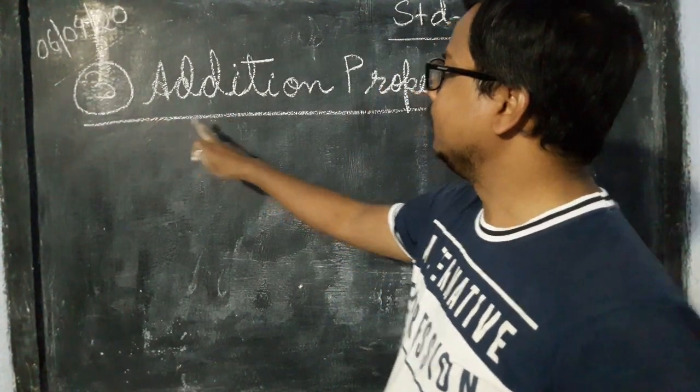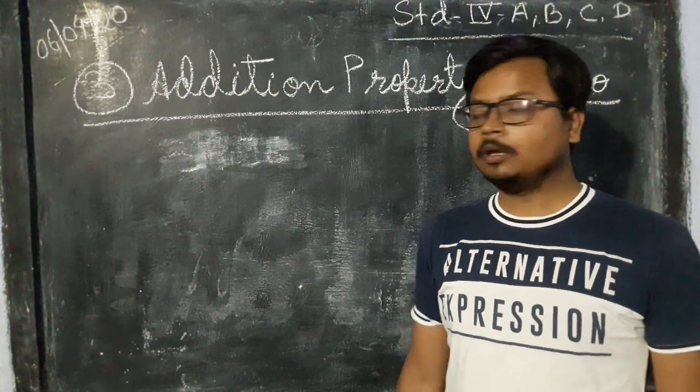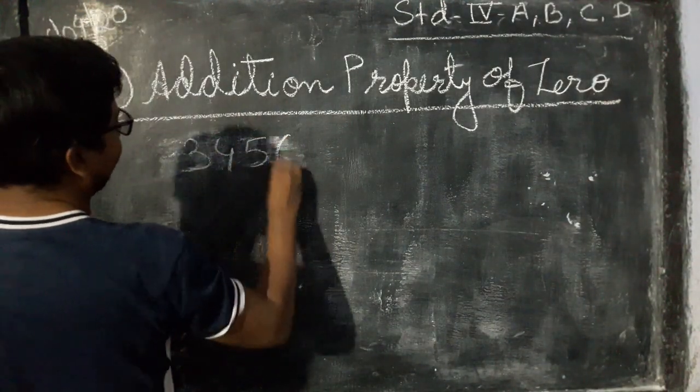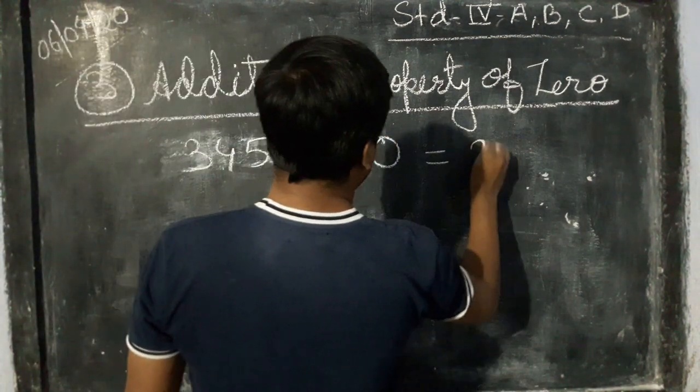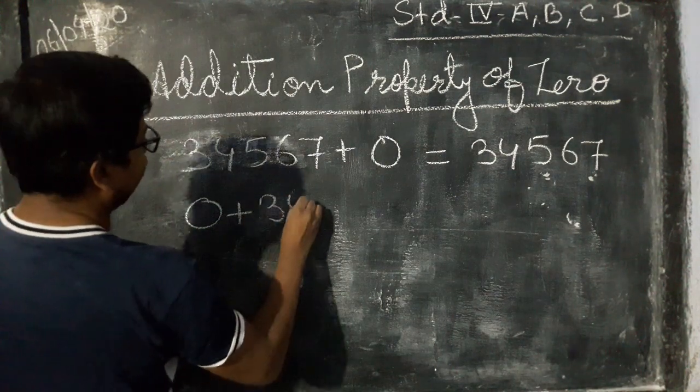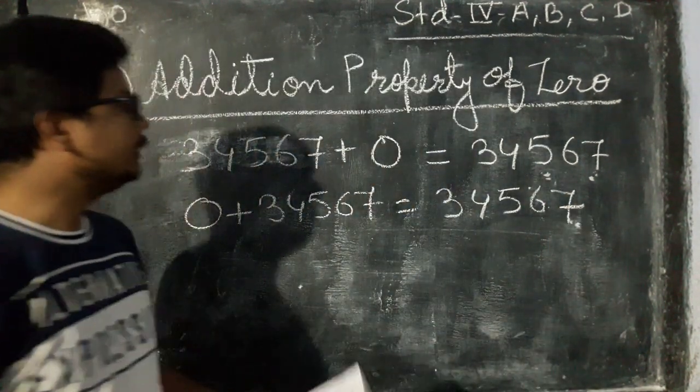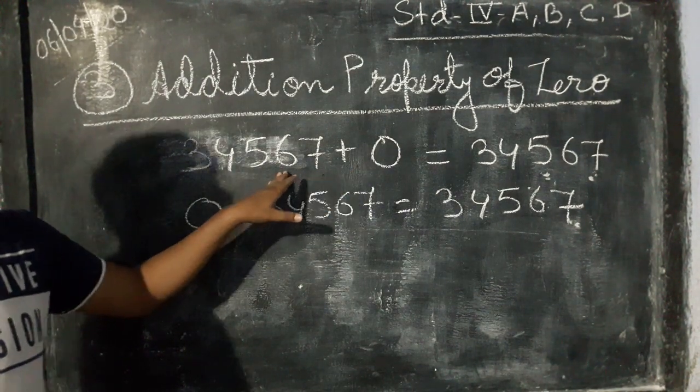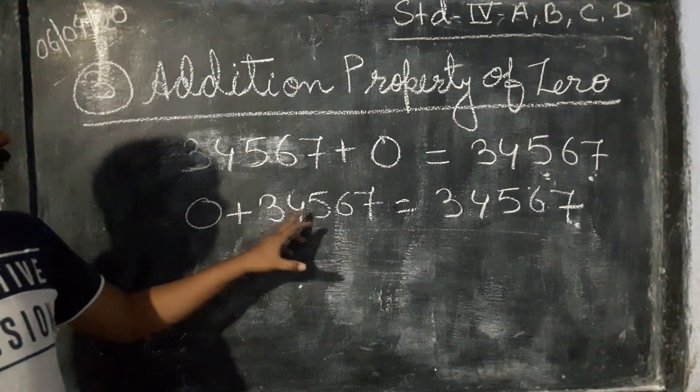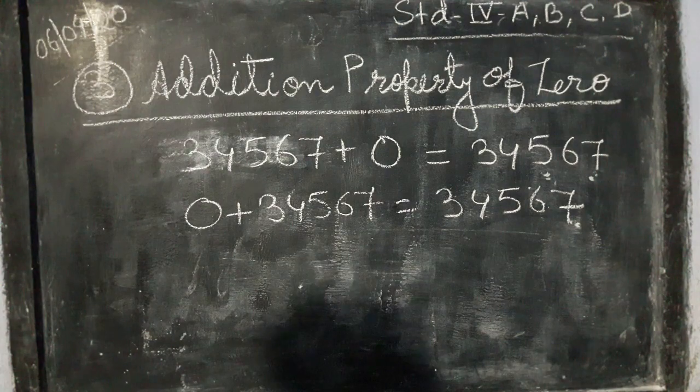Here comes property number 3, addition property of 0. For example, if we add 0 to this number 34,567, the answer is 34,567, or if we add 34,567 to 0, the answer will come same. So this is the addition property of 0.